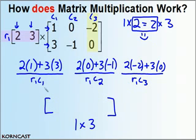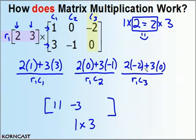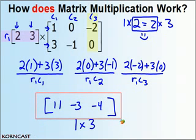Now it's just order of operations: 2 times 1 plus 3 times 3 gives 2 plus 9 equals 11. Then 0 plus negative 3 is negative 3. And negative 4 plus 0 is negative 4. So this is the product of those two matrices, and what I end up with is a 1 by 3 matrix.